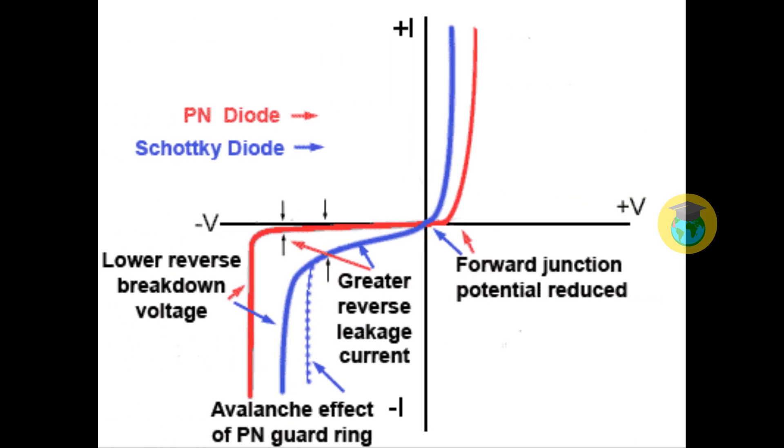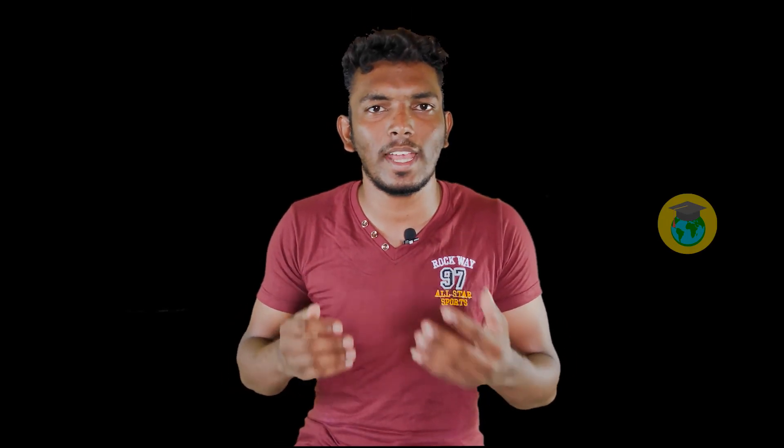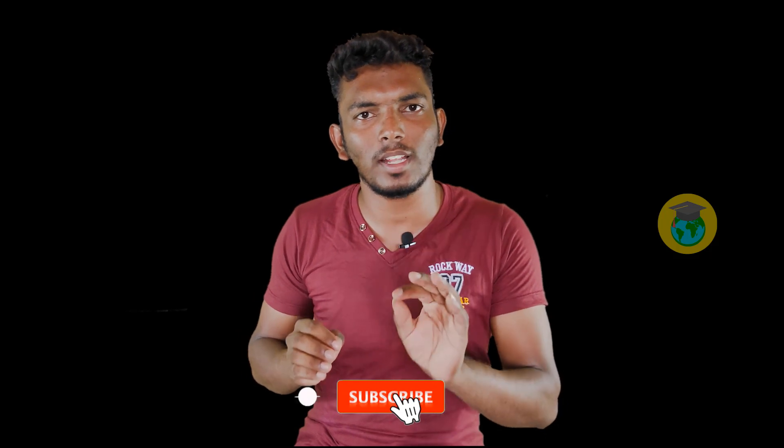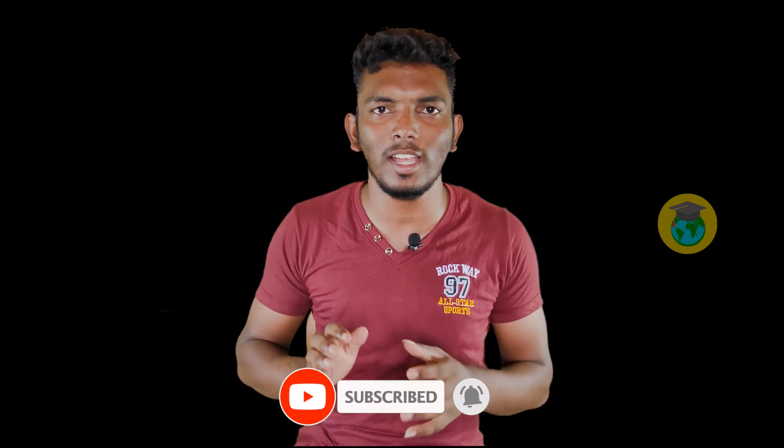If you look at the characteristics graph, there is a visible difference between the PN diode and the Schottky diode. If you have any questions, please give me a comment. If you want to share this video, please like and share it. See you in the next video. Bye-bye.